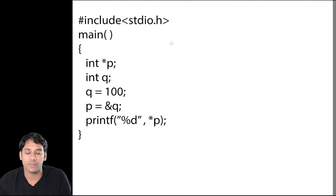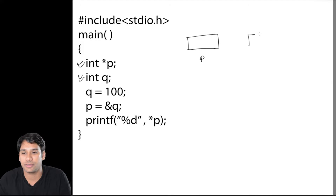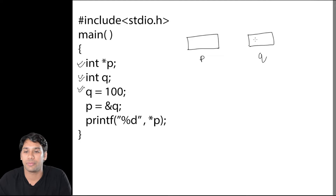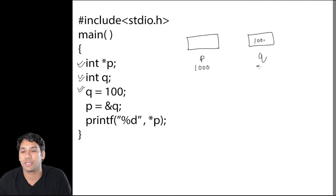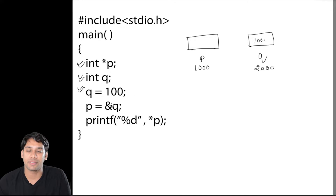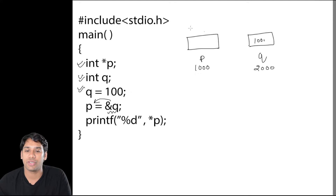Consider this program: we have a pointer p and an integer number q. Let's suppose the address of pointer p is 1000 and the address of integer number q is 2000. We store 100 into q, so q now stores 100. Then we do p = &q, meaning we find the address of q (which is 2000) and store it into pointer p.